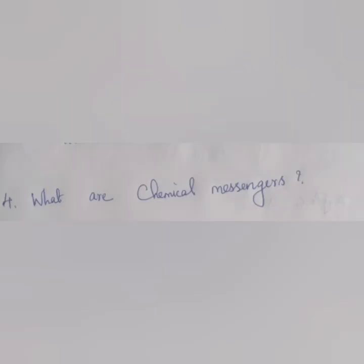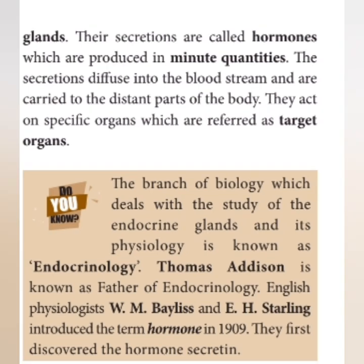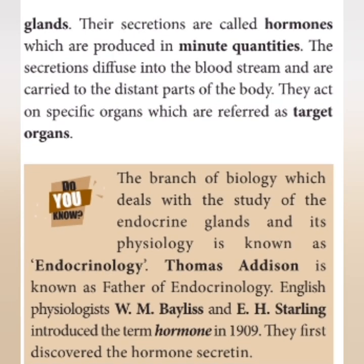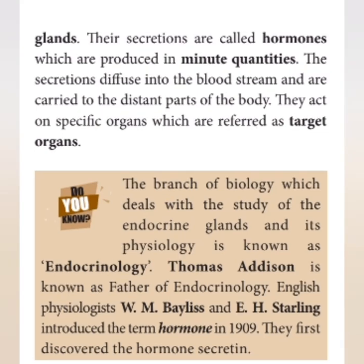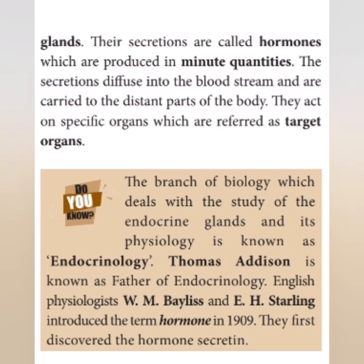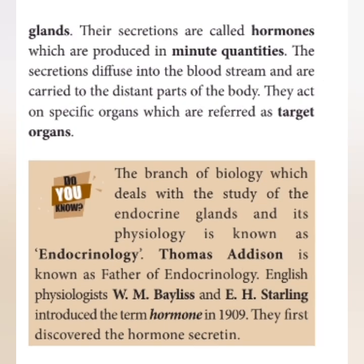The next question is: what are chemical messengers? The endocrine glands secrete hormones, which are called chemical messengers. They diffuse into the bloodstream and are carried to different parts of the body. The father of endocrinology is Thomas Addison. The term 'hormone' was introduced by W.M. Bayliss and E.H. Starling in the year 1909. The first hormone discovered is called secretin.